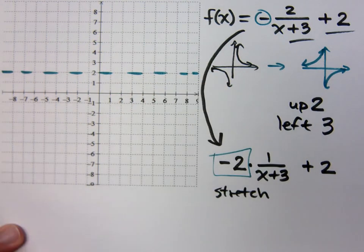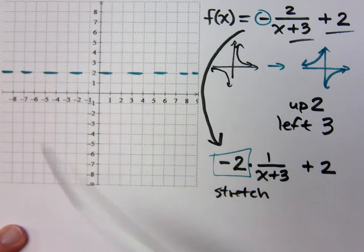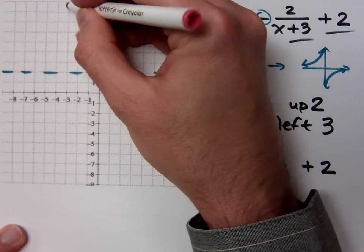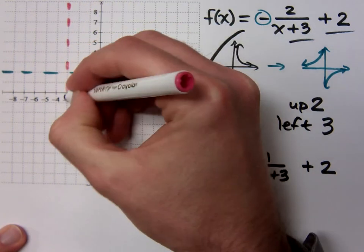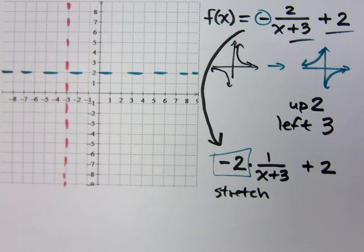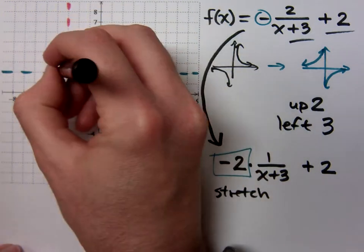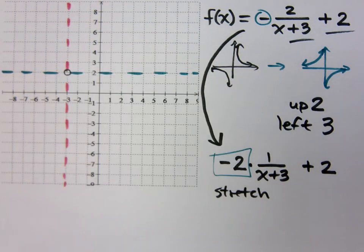Your vertical asymptote was where? Zero. X equals zero. Where is it now? X equals negative three. I shifted it to the left three units. Put all of this in place, and then you can start with your graph. Is everybody okay with where my new asymptotes are?